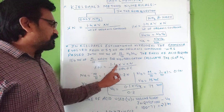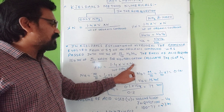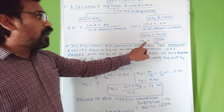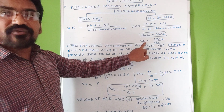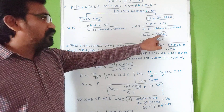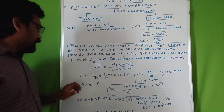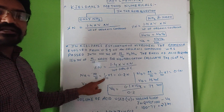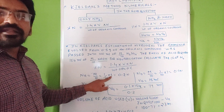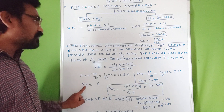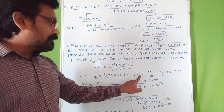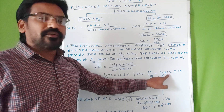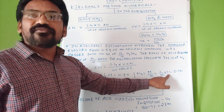We apply the formula: percentage of nitrogen = 1.4 × volume of acid used × normality of acid ÷ weight of organic compound. We calculate the volume of acid using NA × VA = NB × VB. For NaOH: molarity is M/10 = 1/10; converting to normality, multiply by n-factor 1, giving NB = 0.1. For H2SO4: molarity M/10 converted to normality gives NA = 0.2.